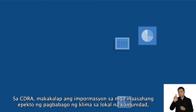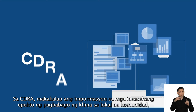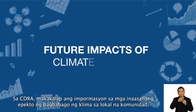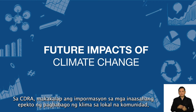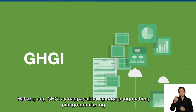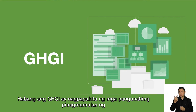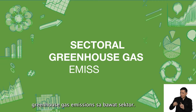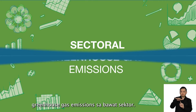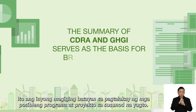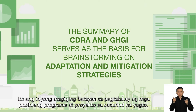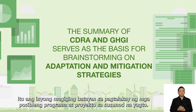In CEDRA, the Climate and Disaster Risk Assessment prepares information on the future impacts of climate change to the planning area, while the GHG Inventory explains the sectoral greenhouse gas emissions. Their summary serves as your basis when brainstorming the adaptation and mitigation strategies in the next stage.